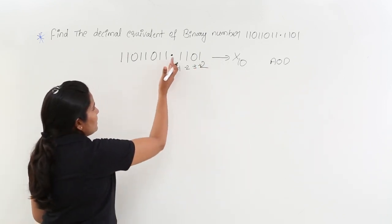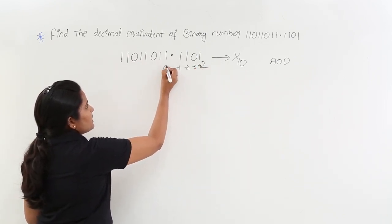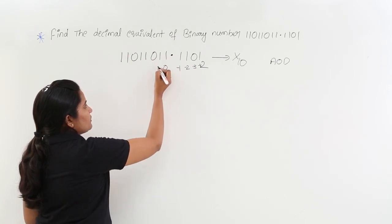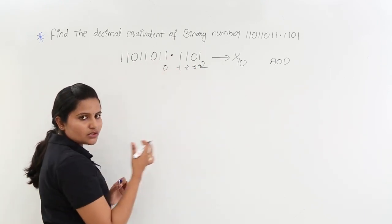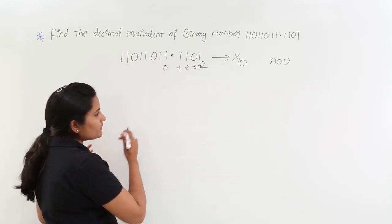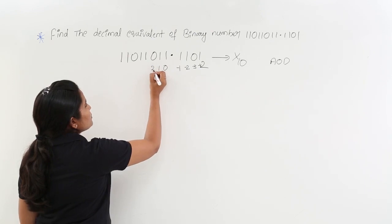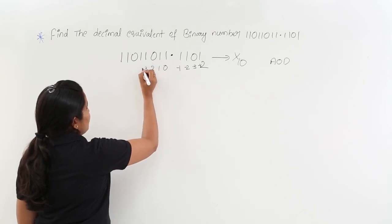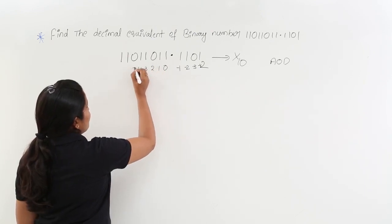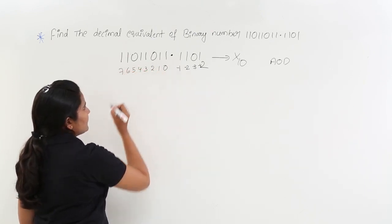For the digits before the decimal point, the place value starts from 0 and goes on increasing from right to left: 0, 1, 2, 3, 4, 5, 6, 7, and so on.